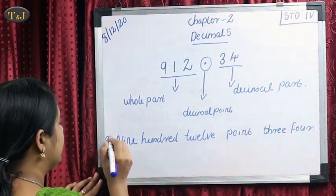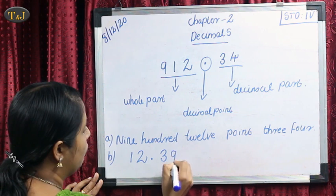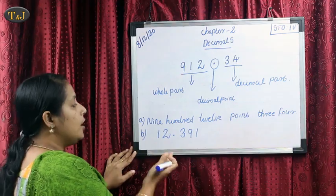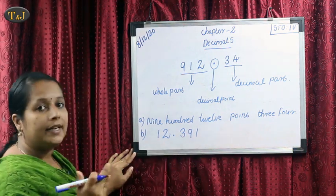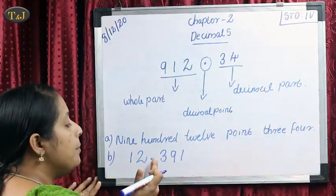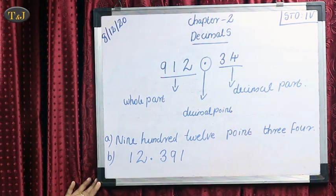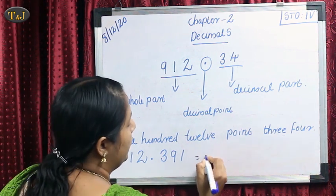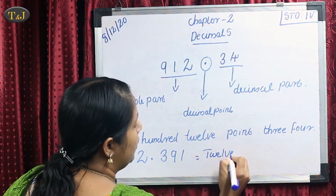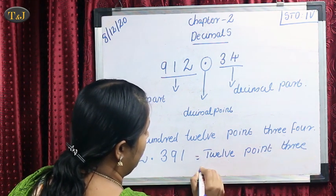Then one more example. This number has a whole part and a decimal part, and the dot is known as the decimal point. So it is read as 12.391. After the point, we read the number as single digits — not together. So its number name is 12.391.